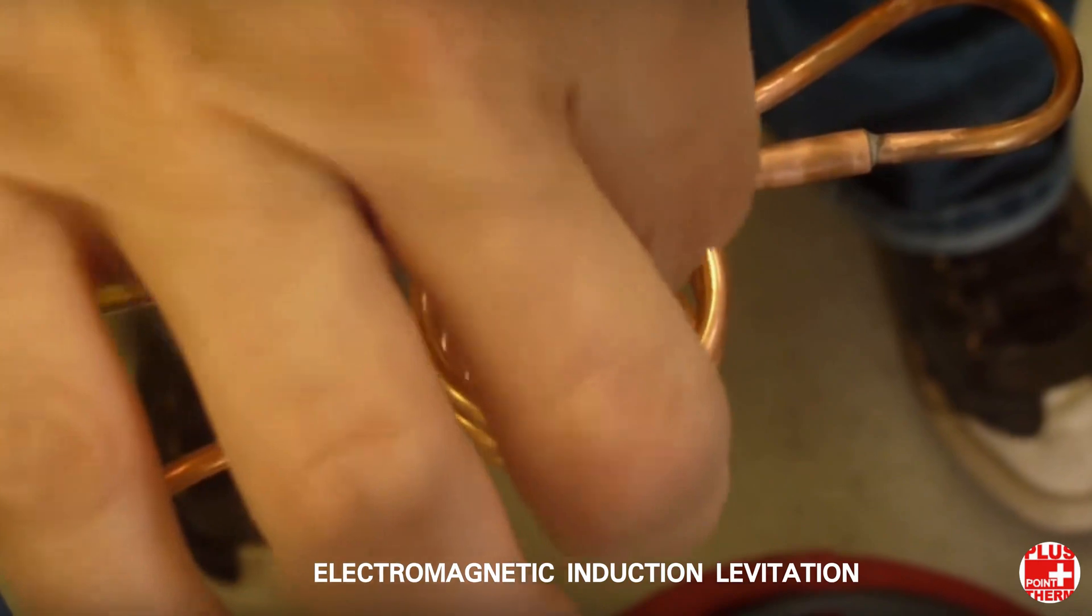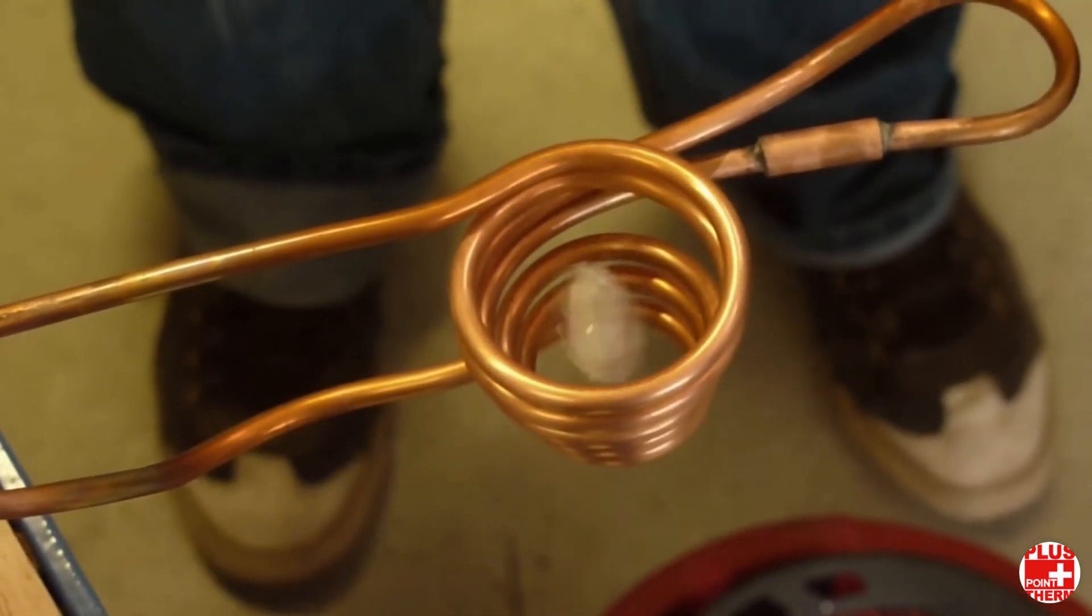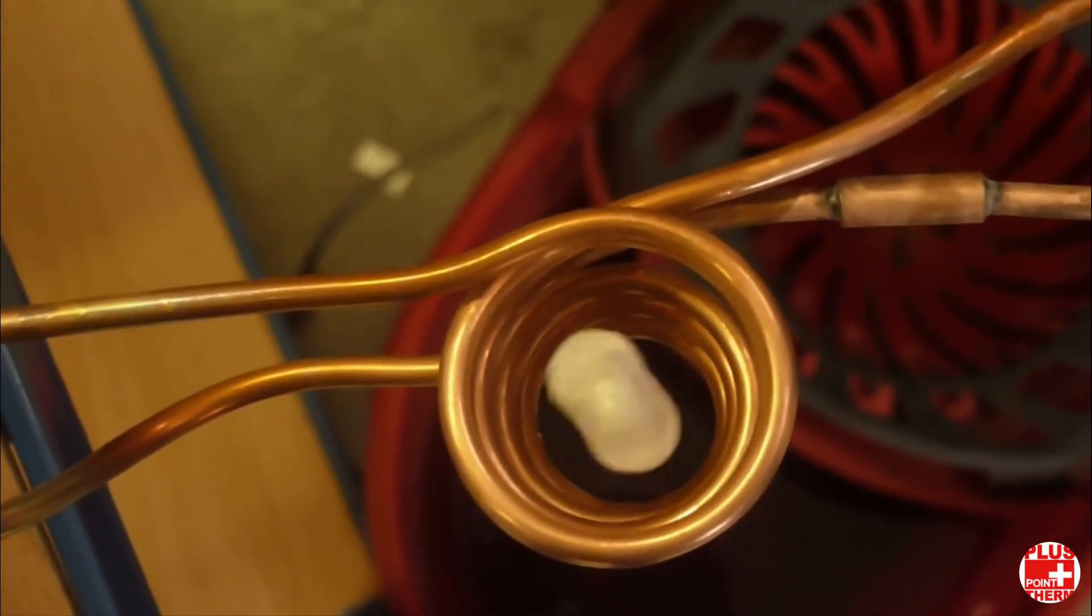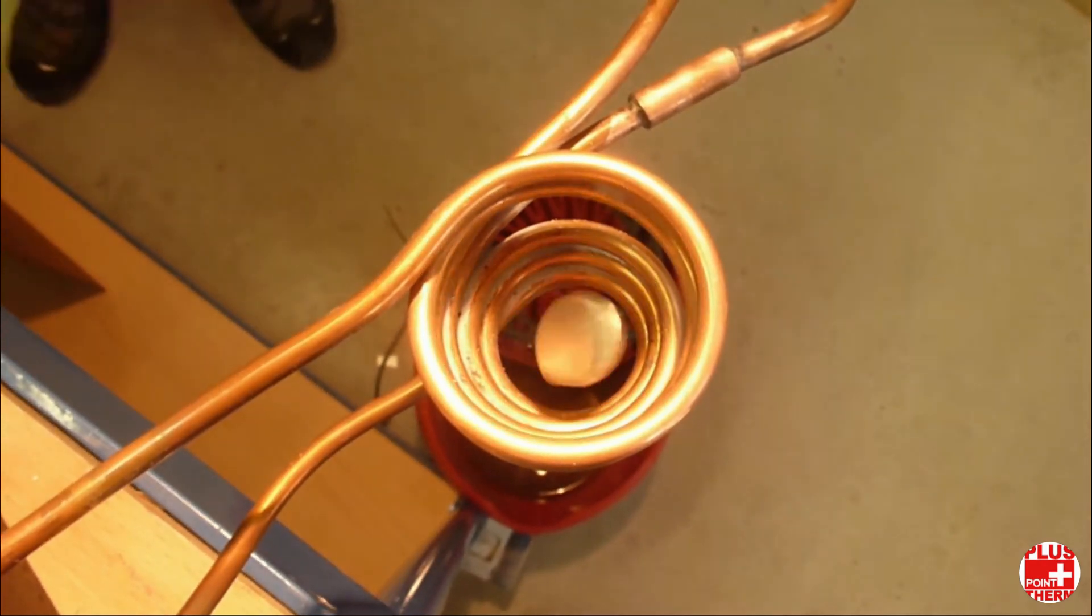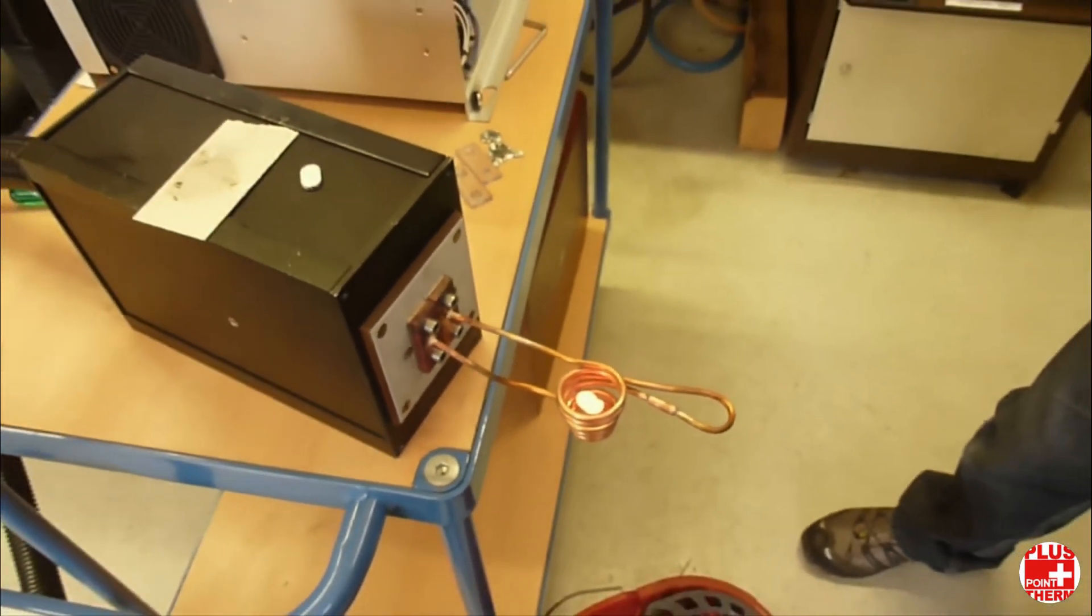Using a levitation coil, a conductive object can be levitated in a magnetic field. Depending on the metal and power setting, you can even boil metals in mid-air. Aluminum will levitate and melt easily at 1 to 1.5 kW of input power.